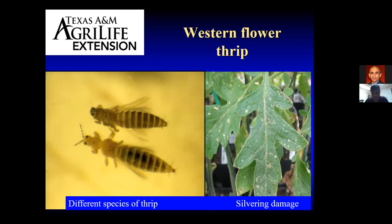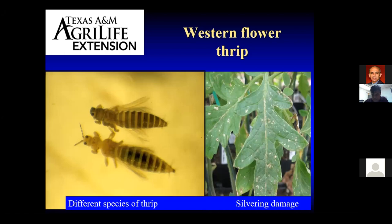One particular type of damage that thrips do — besides transmitting the virus — is silvering damage. As you see in the picture on the right on the leaf, with their rasping and sucking mouthparts they rasp or cut into the leaf tissue and suck the juices, leaving a silvery, whitish look on the leaf. It's pretty characteristic of their feeding when you see it on the leaves.